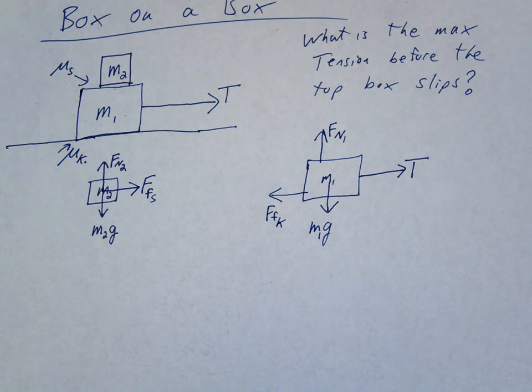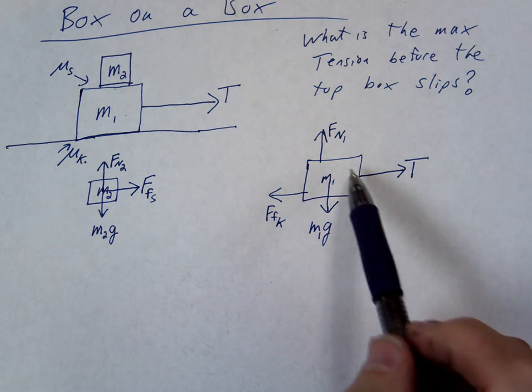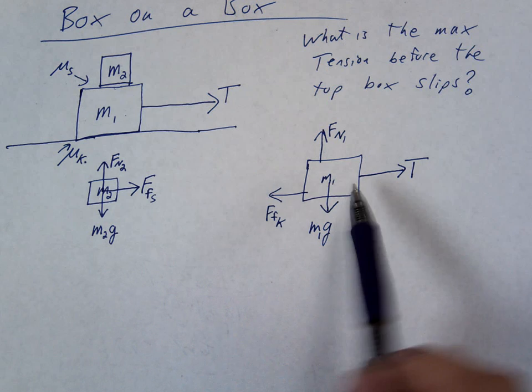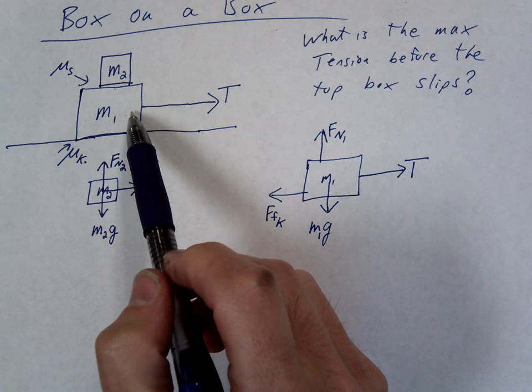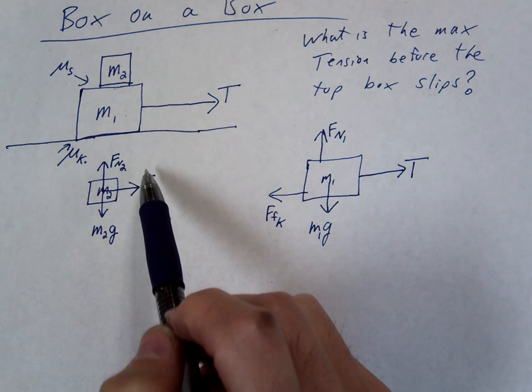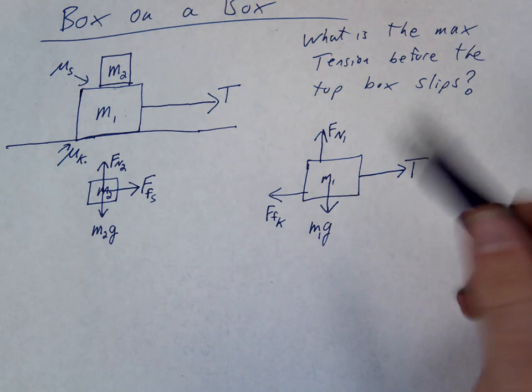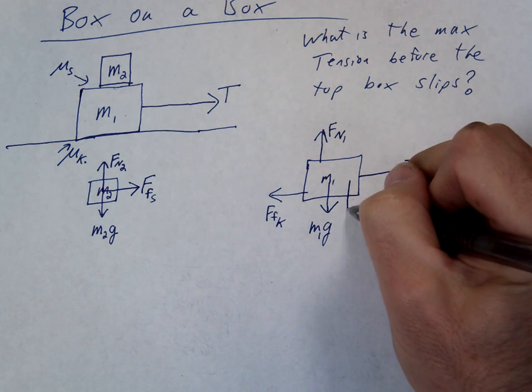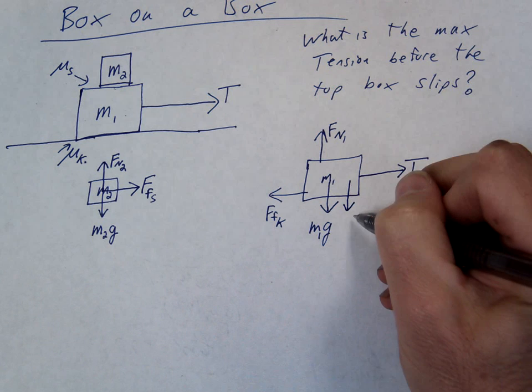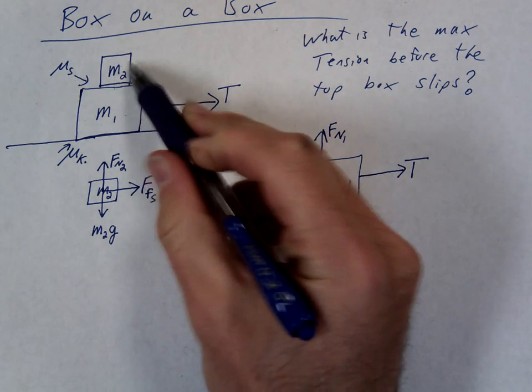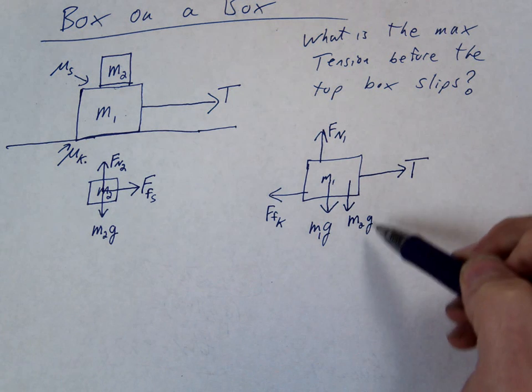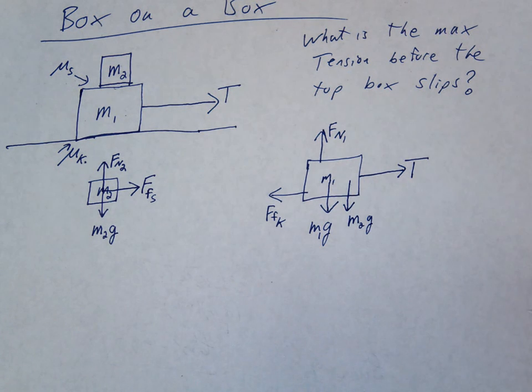Now whenever looking for forces, you always want to think about contact or touching. Is there anything else touching the big block? A little block. Now what's the little block doing to the big block? Pushing it down, right? So the little block is pushing down on the big block. So there's a second force pushing down on the big block. We'll just call that M2G, right? It's the weight of the little block pushing down on the big block with the force of M2G.